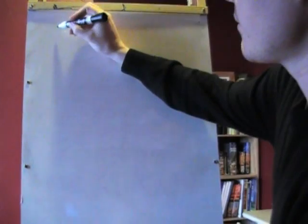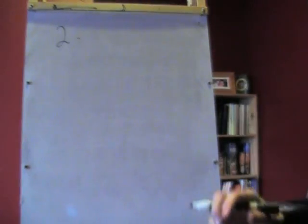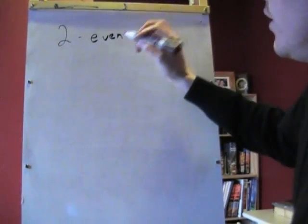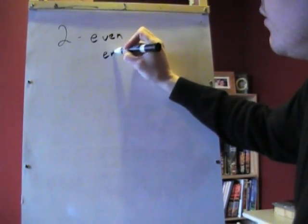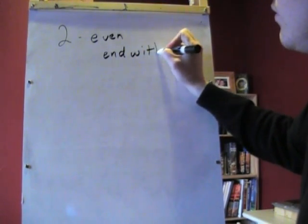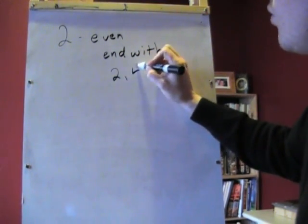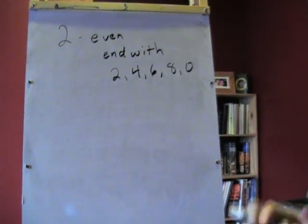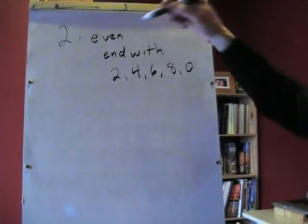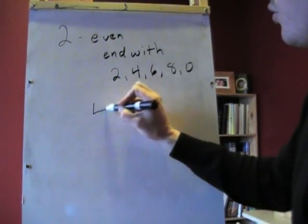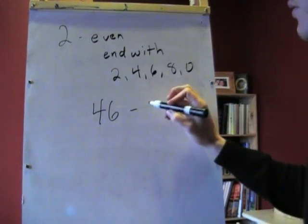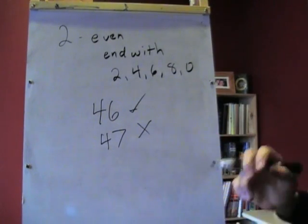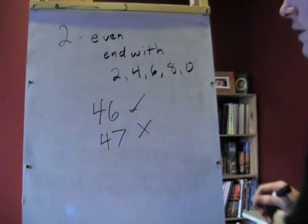The first number we'll talk about is 2. If a number is divisible by 2, then it will be even. In other words, it will end with 2, 4, 6, 8, or 0. So if a number ends in 2, 4, 6, 8, or 0, we can tell that it's divisible by 2. So 46 is divisible by 2. 47, however, is not divisible by 2. That's a pretty quick and easy check.